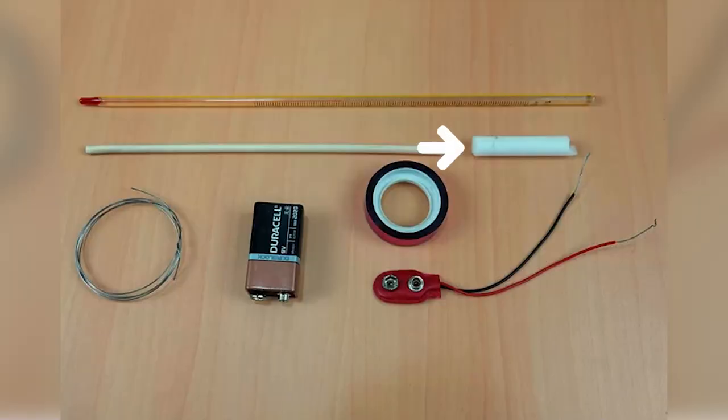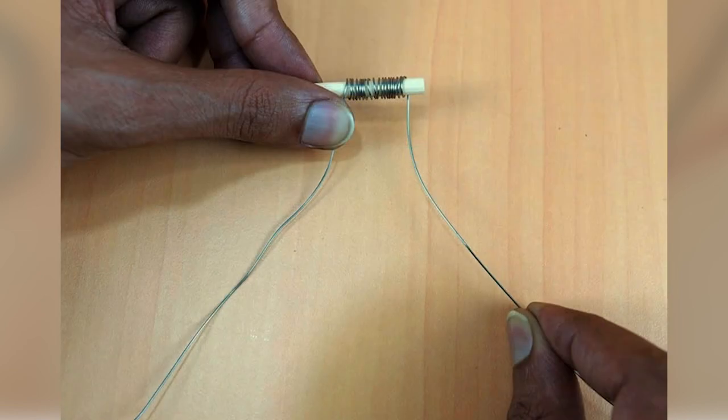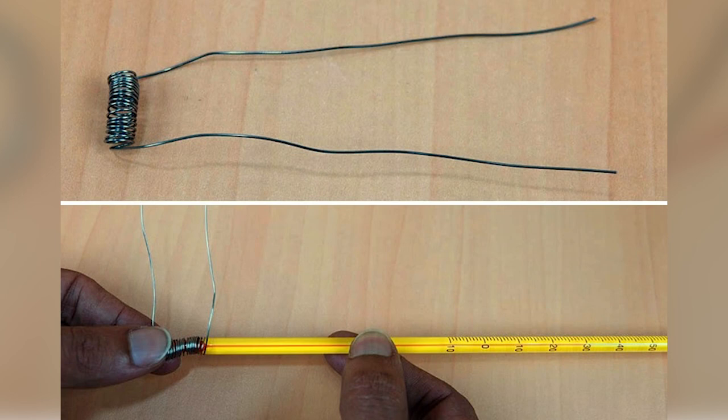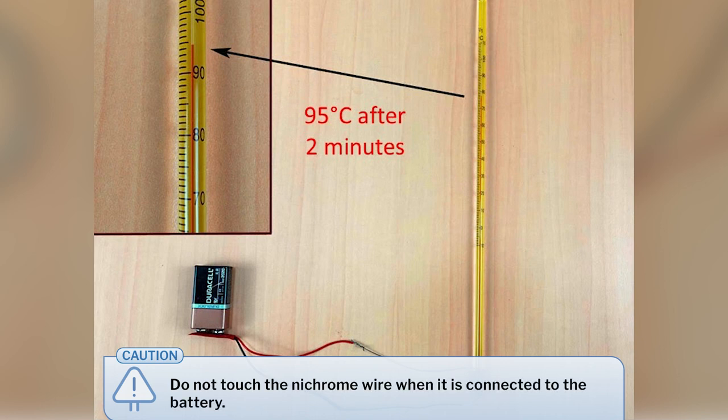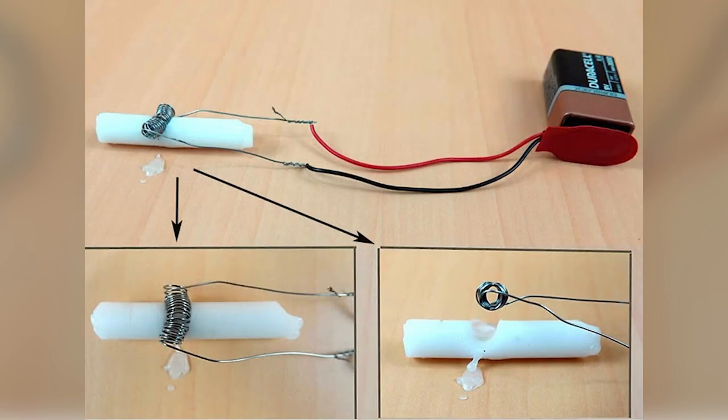I took an example of an iron to explain the heating effect of electric current and also conducted an activity. We need a battery, a candle, a thermometer, and nichrome wire. Wind the nichrome wire around a wooden stick to make a coil — the ends of the wire should be free for connection. Record the initial temperature, then connect the ends of the wire to the battery and record the temperature by placing the thermometer in the coil.